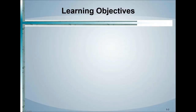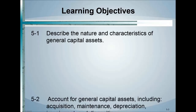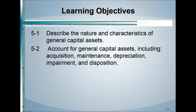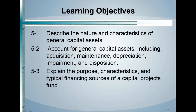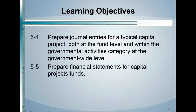Chapter five learning objectives: describe the nature and characteristics of general capital assets. We'll account for general capital assets including acquisition, maintenance, depreciation, impairment, and disposition. We'll also explain the purpose and characteristics and typical financing sources of capital projects, and go through illustrative journal entries for capital projects funds and how they affect the financial statements.